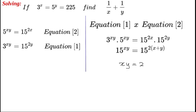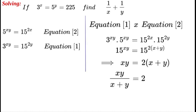Now let's tidy it up and write xy over (x plus y), and that's equal to 2. Now that we have xy over (x plus y), let's concentrate on the final solution: 1 over x plus 1 over y.